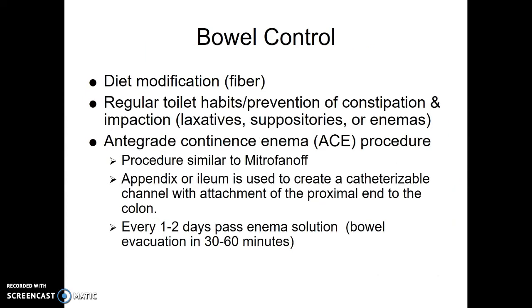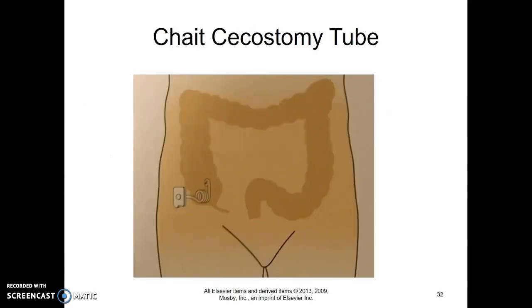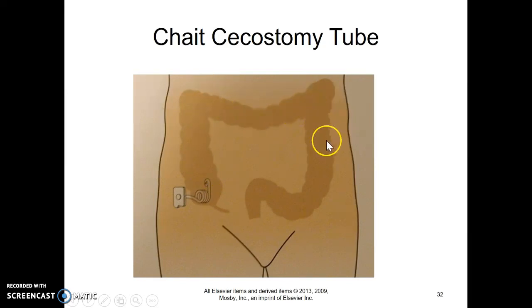For bowel control, they also lack sensation and the ability to bear down. Diet may help but may not be enough, so stool softeners and laxatives may be needed. We really want to avoid constipation and impaction. Many of these kids end up with a device to perform antegrade enemas — unlike regular retrograde enemas from the rectum, these go in at the beginning of the cecum and flow through the ascending, transverse, and descending colon to push stool out.